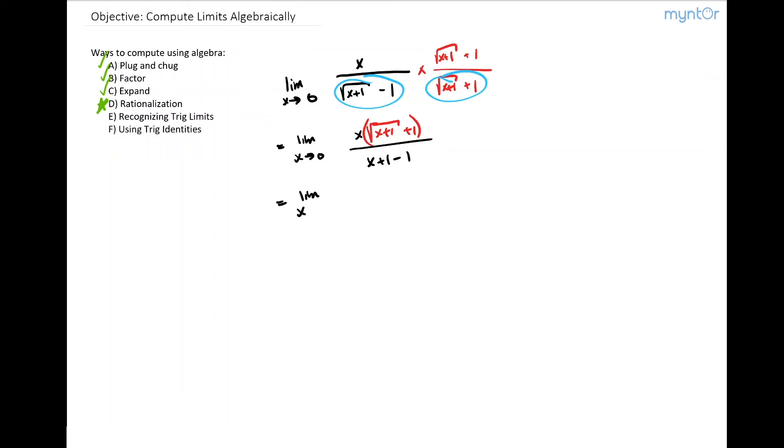So the limit as x approaches zero of x times square root of x plus one plus one over x. We notice that the two x's can cancel out.